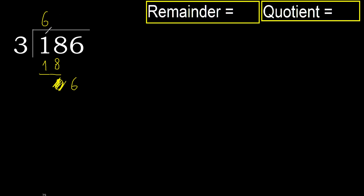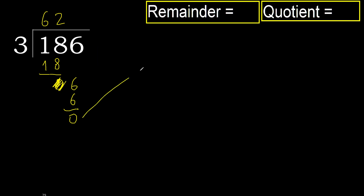3 multiplied by 2: 6. 6 is not greater. Subtract — 0. Next digit: that is not a number, therefore finish.